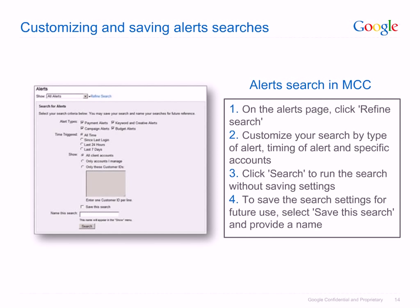Click the Search button to run the search without saving the settings. To save these search settings for future use, check the box to save this search and give your search a name. You can save up to 200 searches. Once saved, you can run this same search again by choosing its name from the menu at the top of the search page. Note that alerts will continue to show if they meet the search criteria until they're either resolved or dismissed. However, critical alerts cannot be dismissed and must be resolved in order to remove them from the Alerts page.